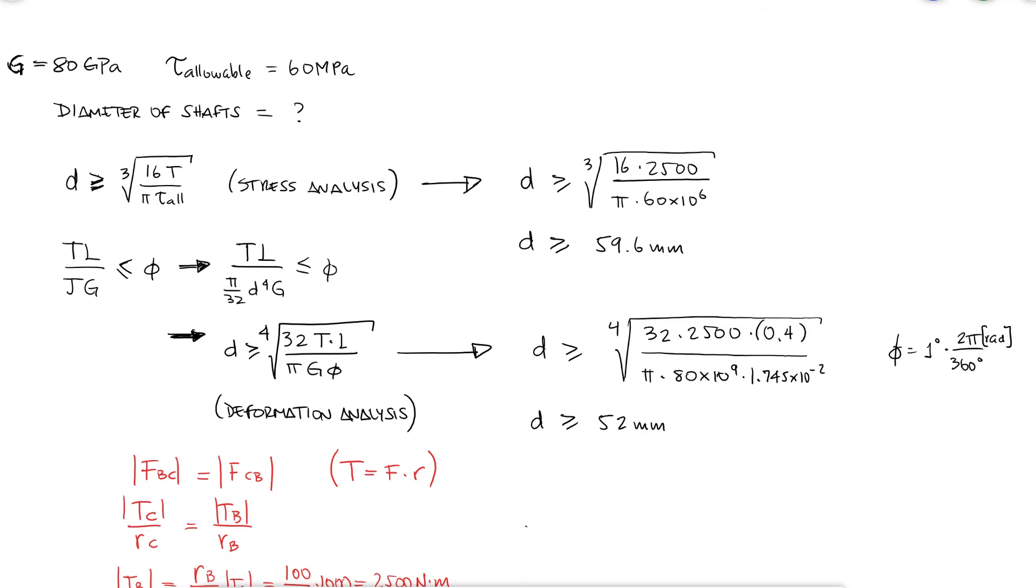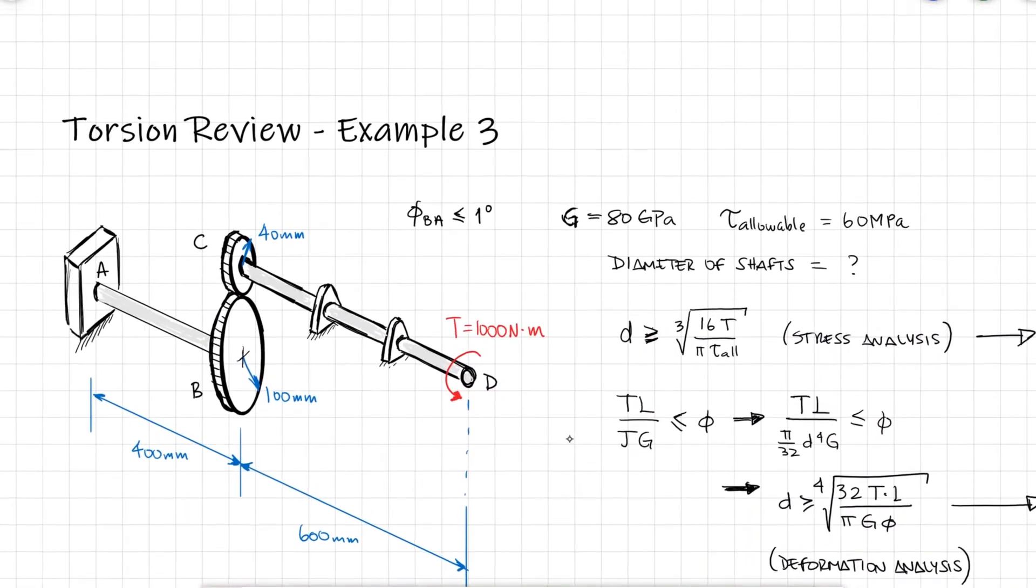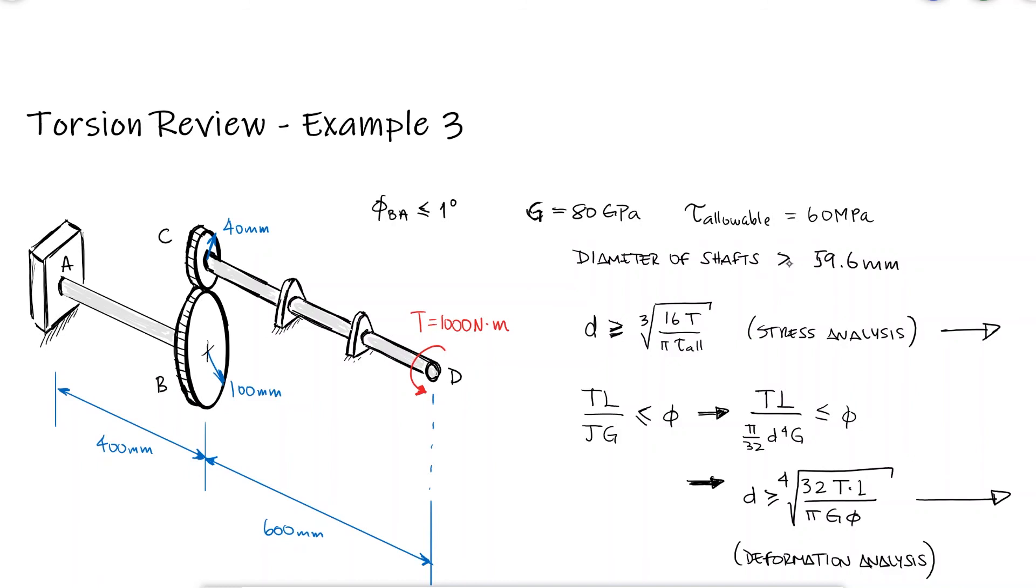If I want the angle of twist to be lower than 1 degree and for the shafts to not exceed the maximum allowable shearing stress, my design would recommend a diameter of at least 59.6 mm.